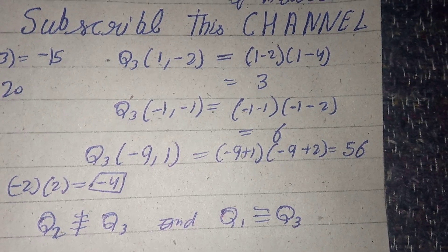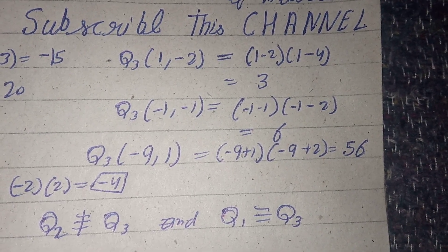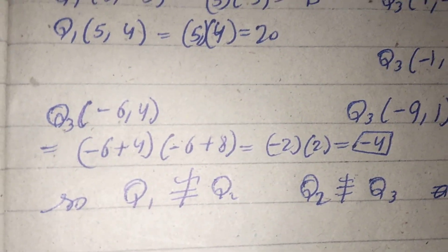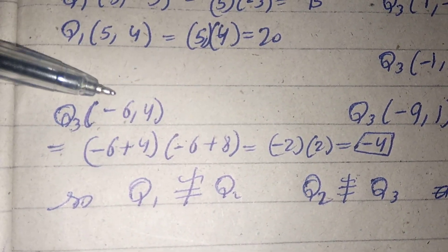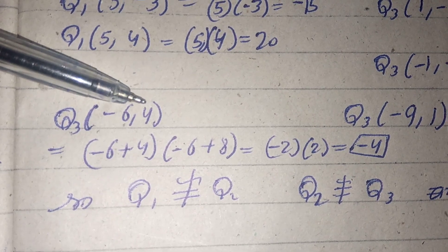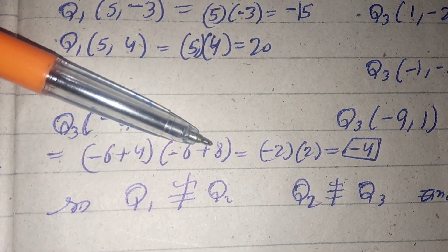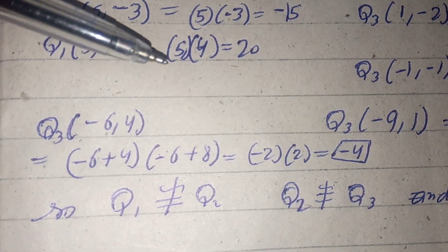But q3 is not always positive, as is clear from this example. When we take x=-6 and y=4, we get (-6+4)(-6+8) = (-2)(2) = -4.